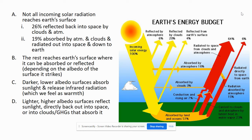Here's another breakdown of where that energy goes. Not all incoming solar radiation reaches Earth's surface — some is reflected back into space by clouds and the atmosphere, while some is absorbed by the atmosphere and clouds. The rest reaches Earth's surface, where it can be either absorbed or reflected depending upon the albedo. The darker the surface, the lower the albedo, the more sunlight it absorbs and releases as infrared radiation, making it feel warm.